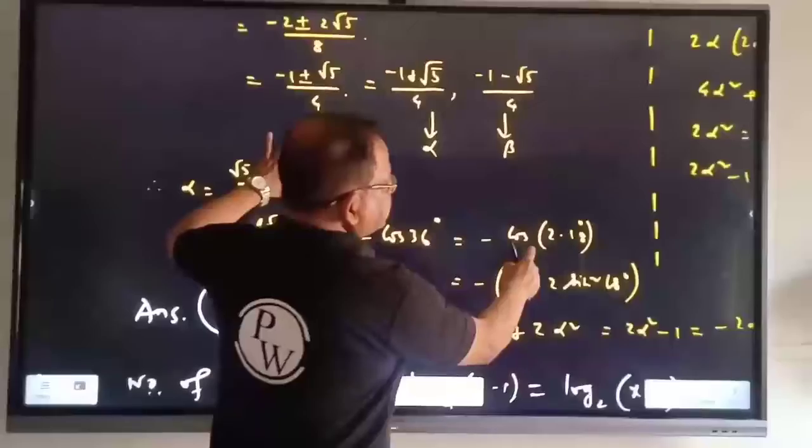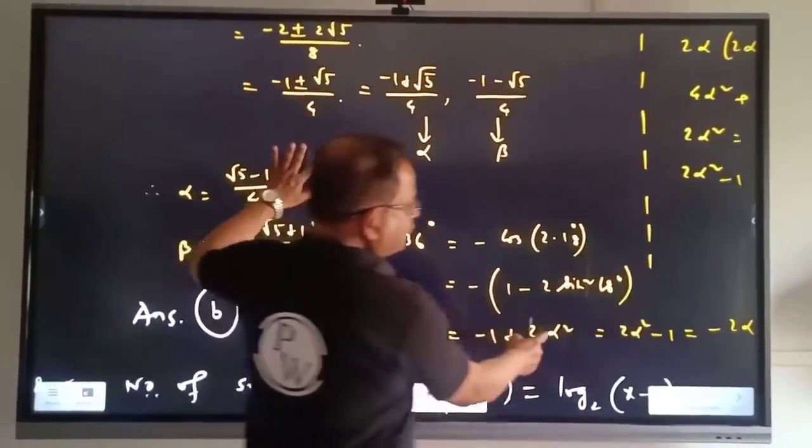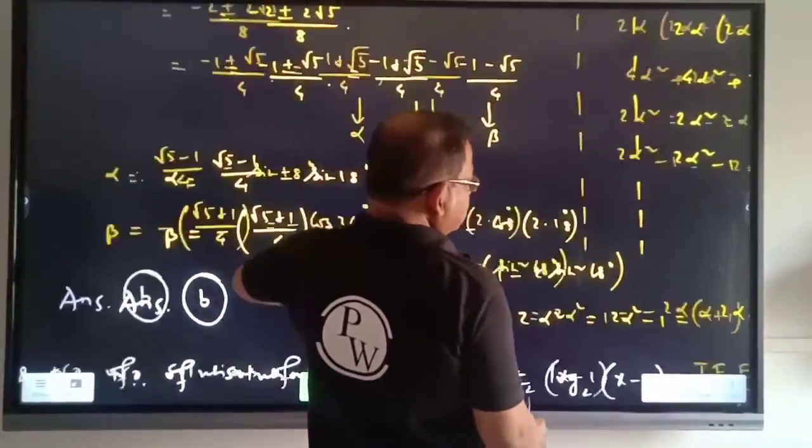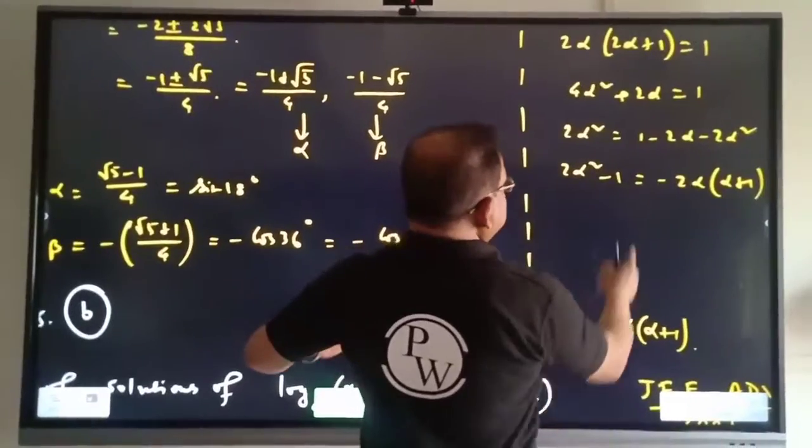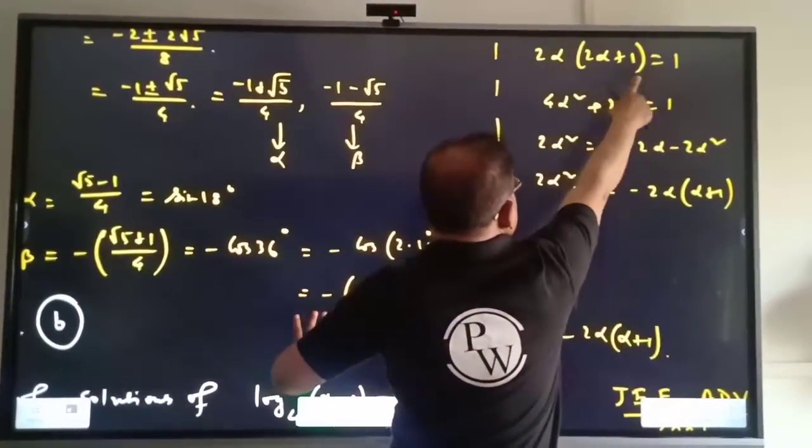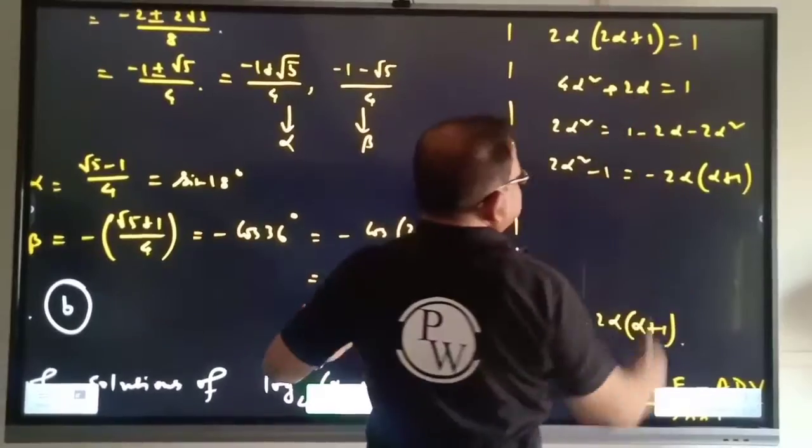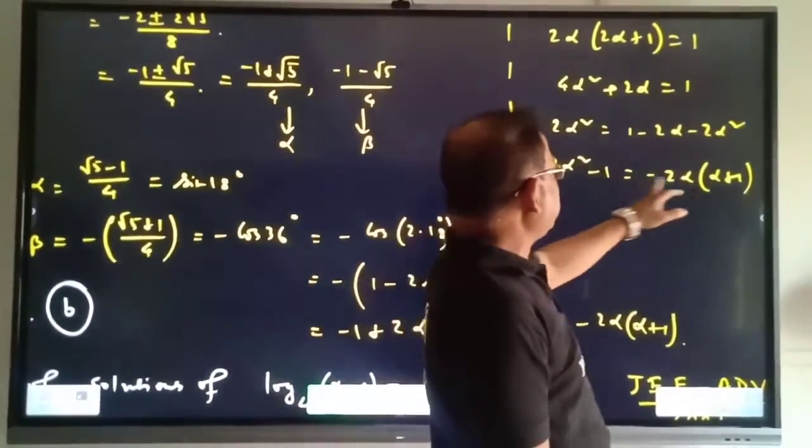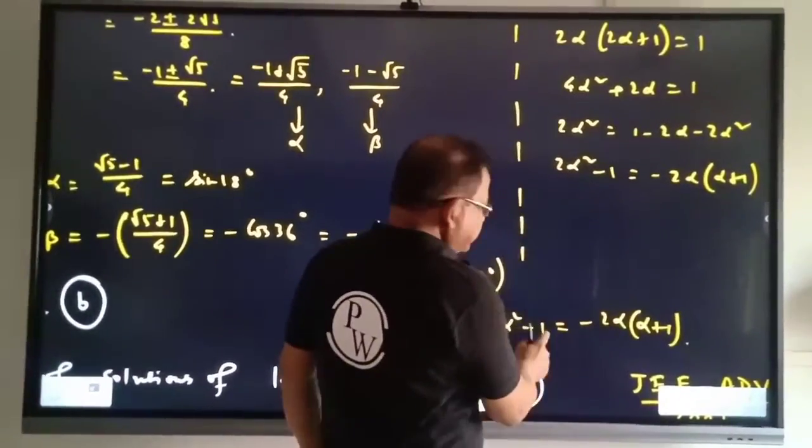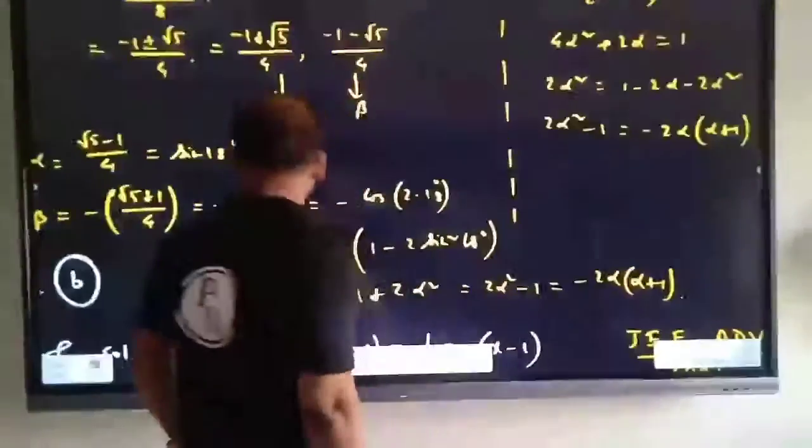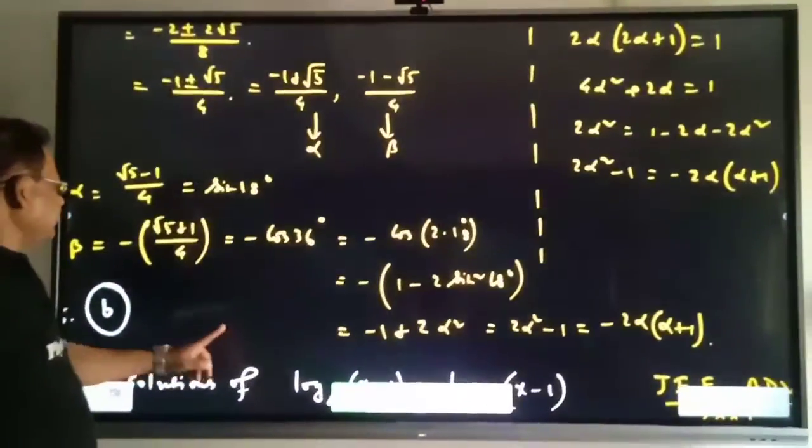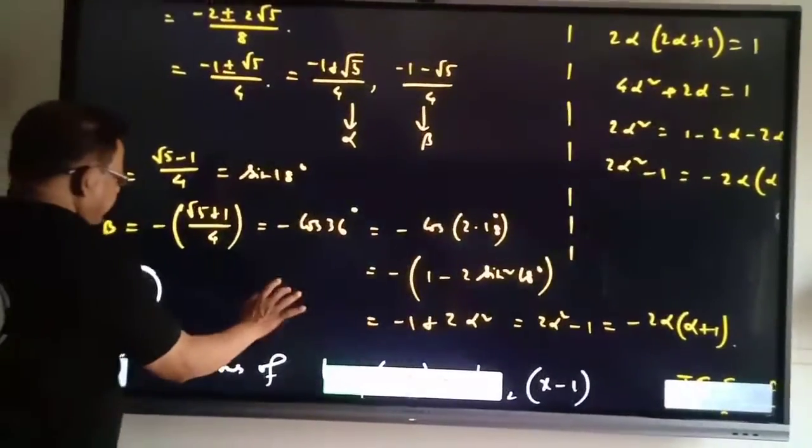We need cos 36 squared minus 1 plus 2 alpha squared, which equals 2 alpha squared minus 1. This is clear. So option B is the right choice.